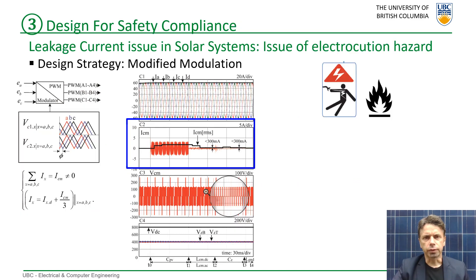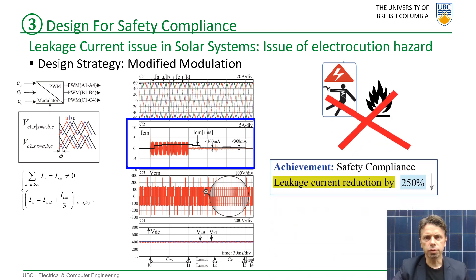In the solar system, the problem of leakage current can create safety hazards. The modified modulation with phase shift in carriers results in a 250% leakage current reduction, eliminating electrocution and fire hazards.